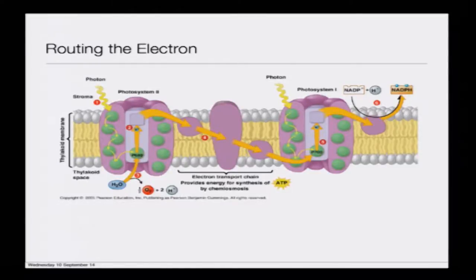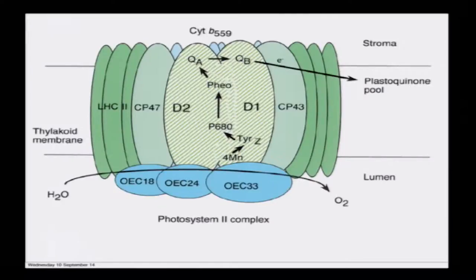The electron ejected by Photosystem 1 (P700) is then used by the enzyme NADPH reductase to make the energy-rich molecule NADPH — it takes two electrons to make the NADPH molecule. Meanwhile, underneath P680 there is water which is getting split — this is the seat of the water-splitting cluster.